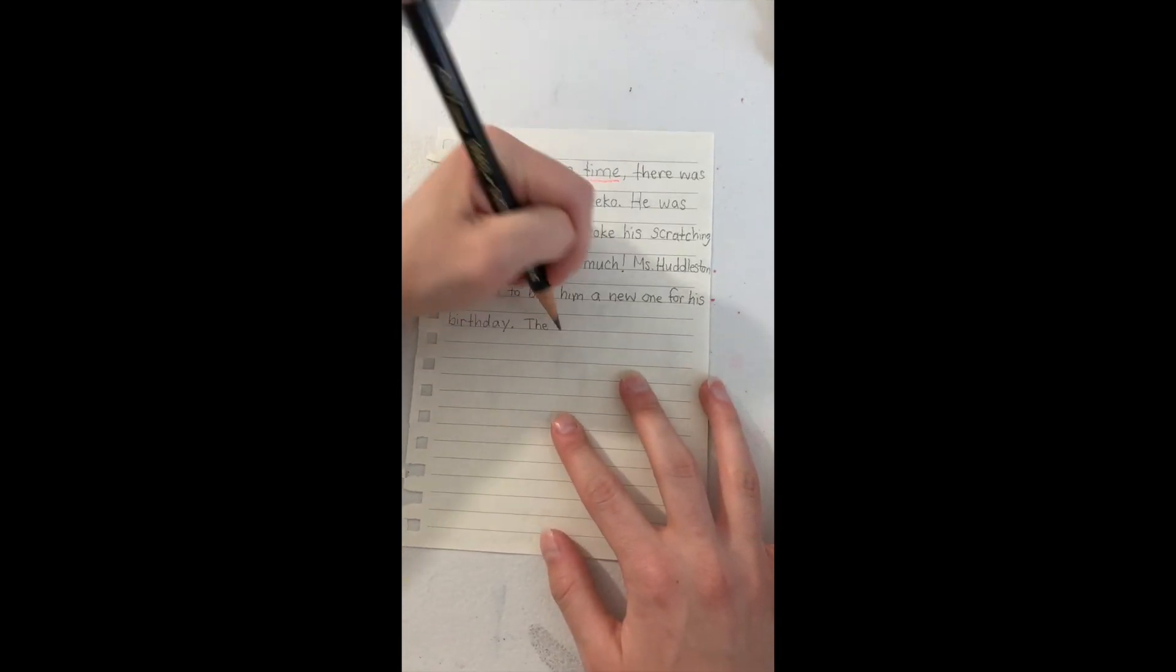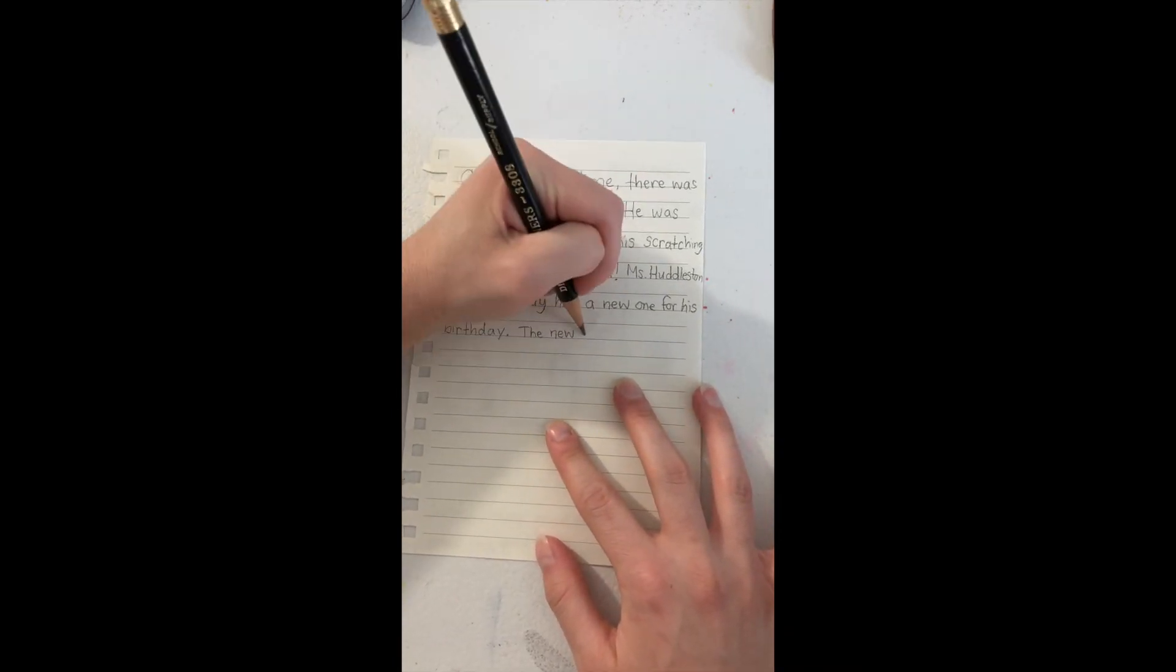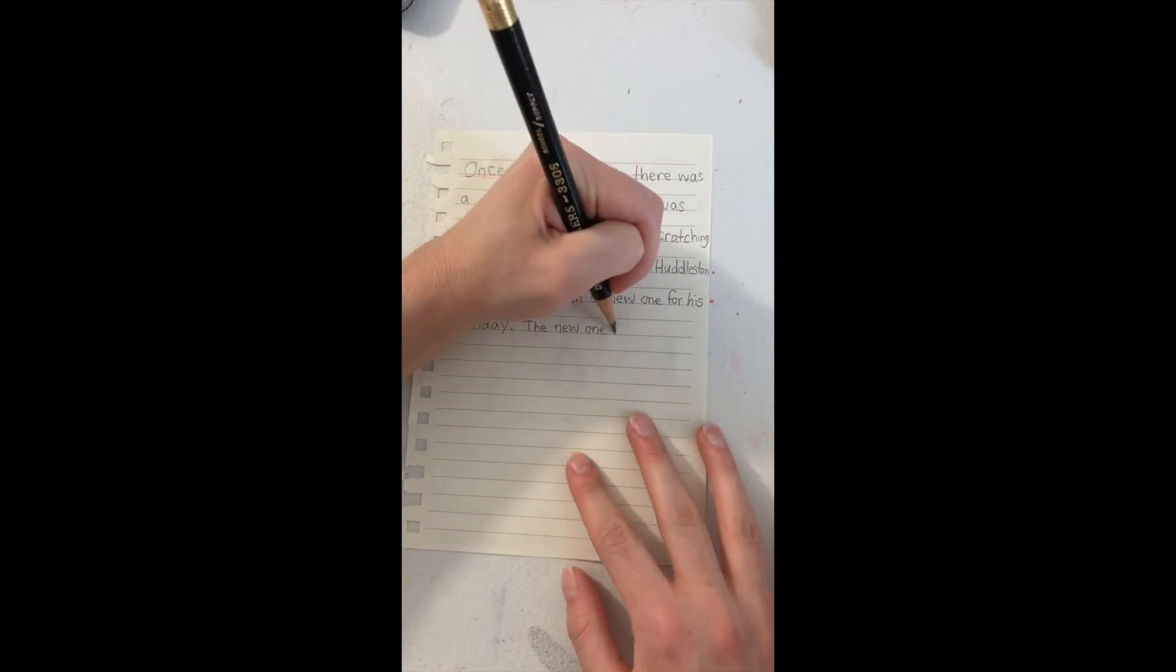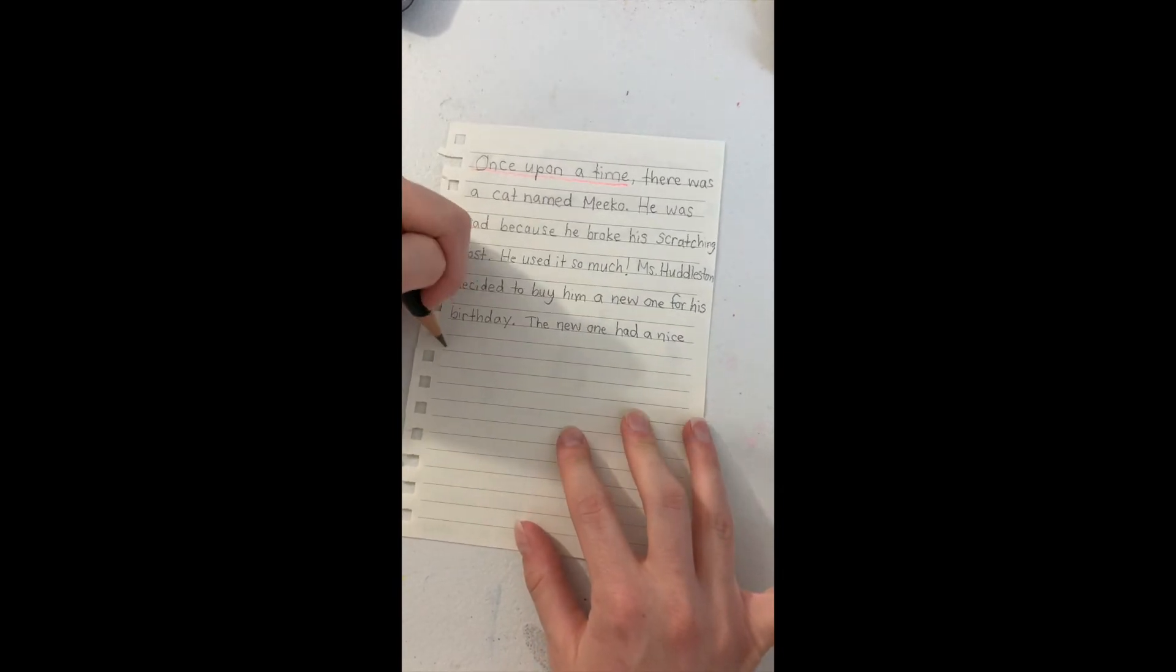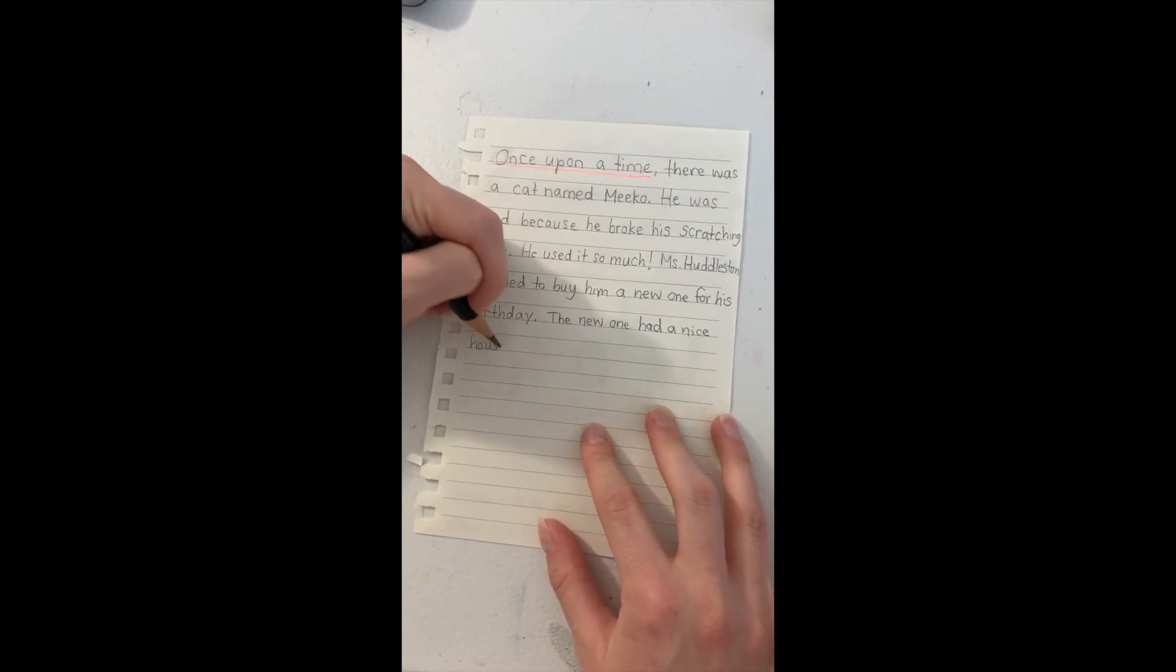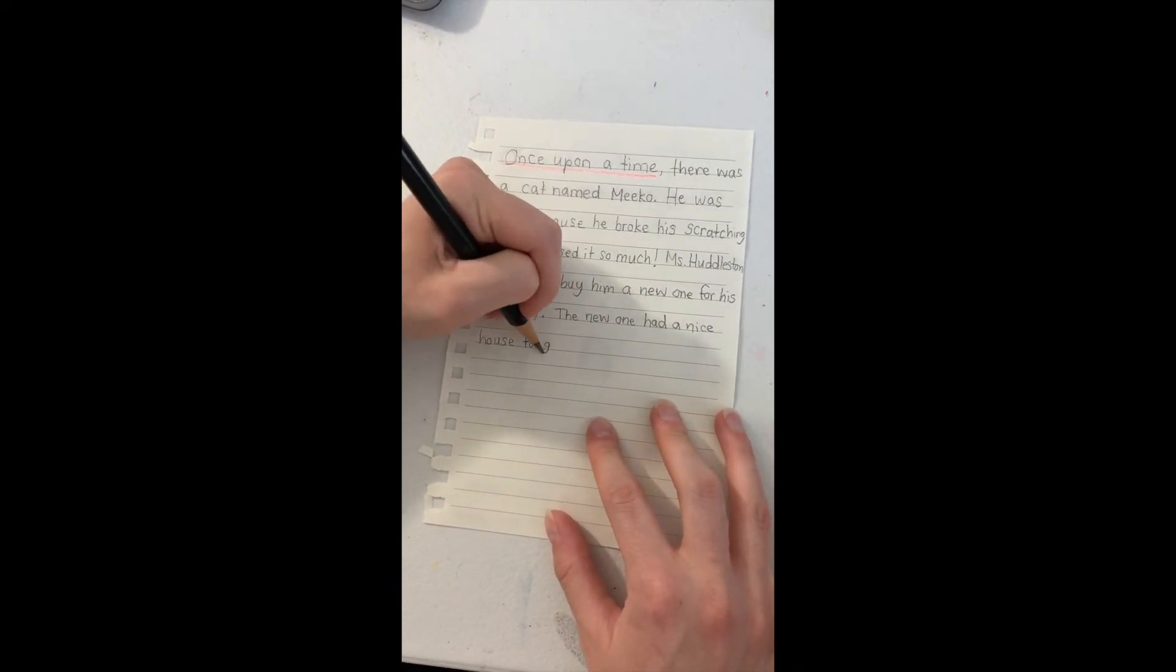Next, I'm going to use details to tell about what this new one looked like. So, I'm going to write, the new one had a nice house to go with it. Then, you have a better picture in your brain of what it looked like.